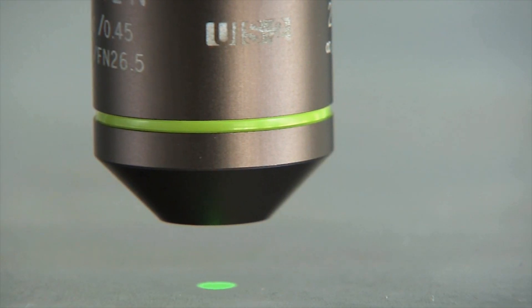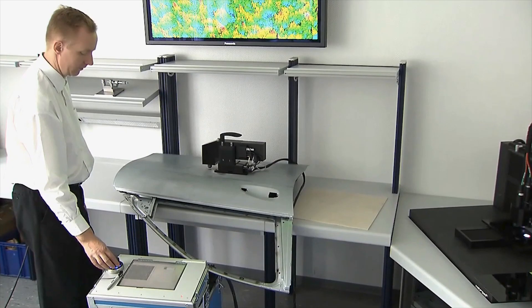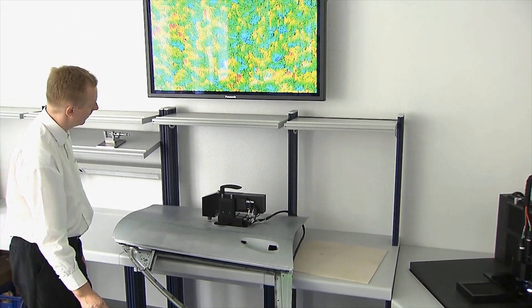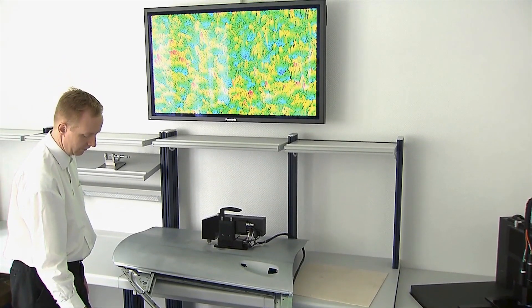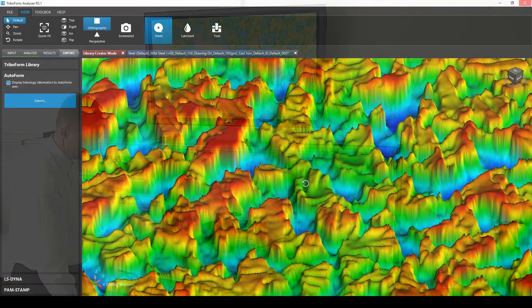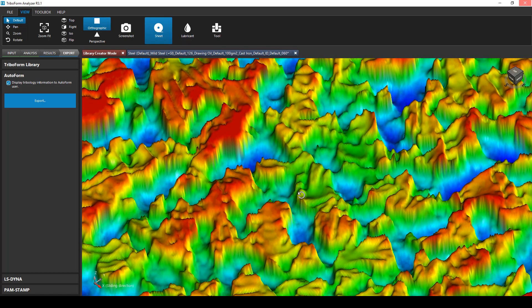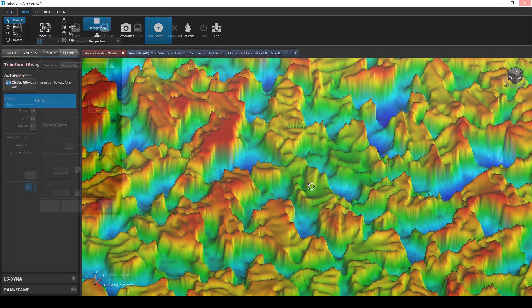The software also provides the functionality to import 3D surfaces of the sheet materials and stamping tools. The surface texture can be captured with great accuracy using 3D confocal microscopy.